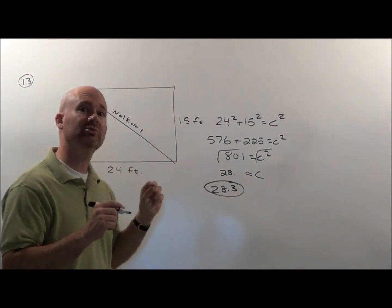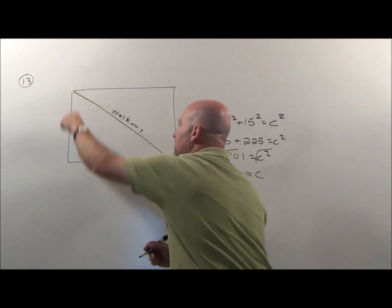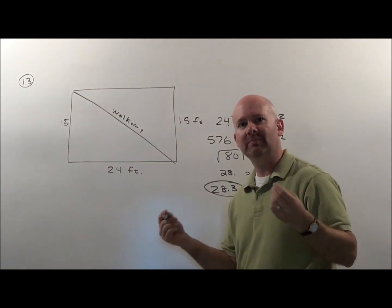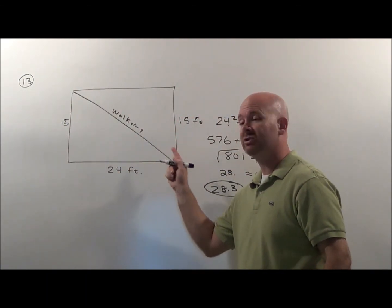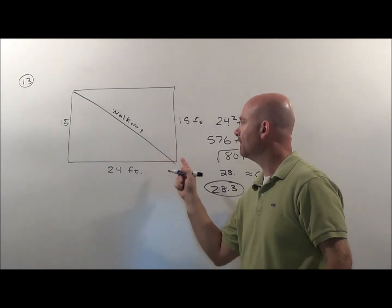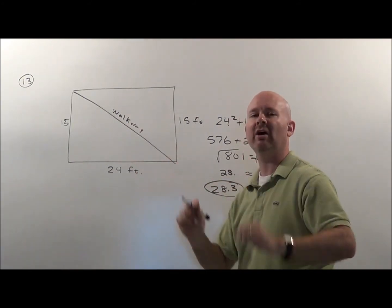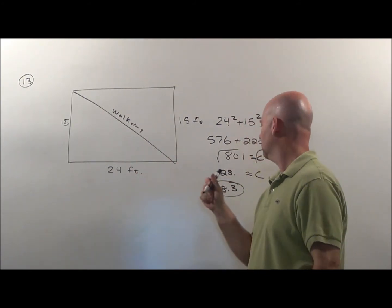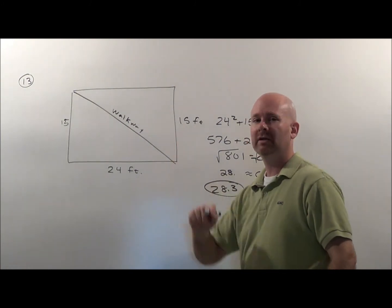So again, once you see one of these shapes, boom, you know to use the Pythagorean theorem. If you see any right triangle with two lengths given, it's got to be a Pythagorean theorem problem. There's our answer: 28.3 for number 13.